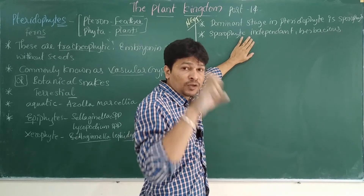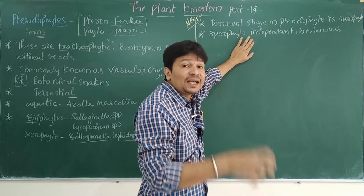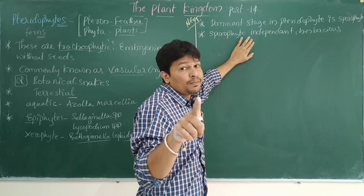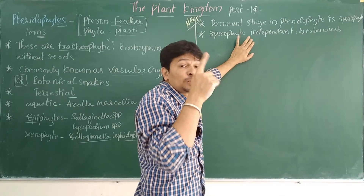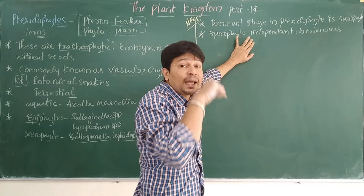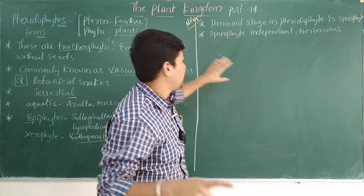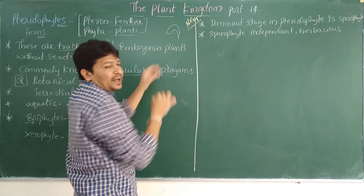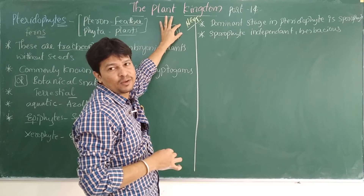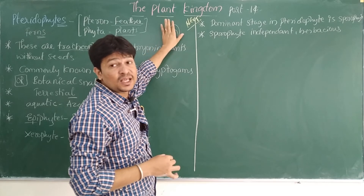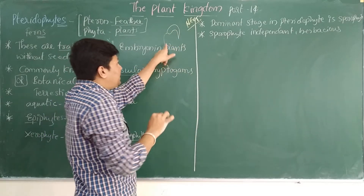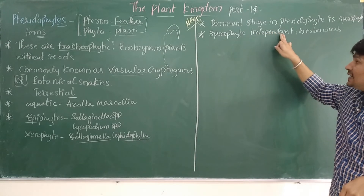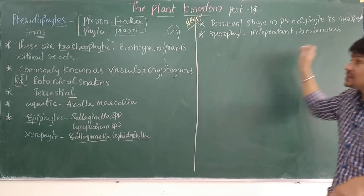In contrast, in bryophytes the sporophyte is partially dependent on the gametophyte. But in pteridophytes, the sporophyte is independent and herbaceous, and it can be differentiated into root, stem, and leaves.